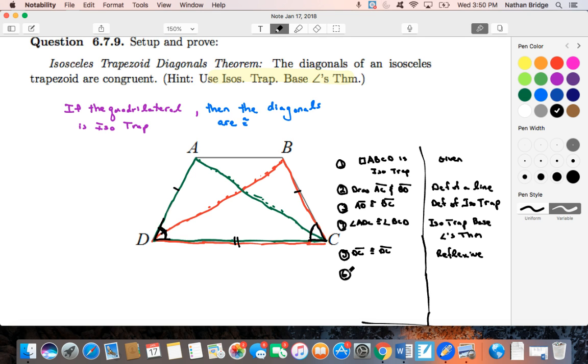triangle A, D, C is congruent to triangle B, C, D. Why? Because of side, angle, side.